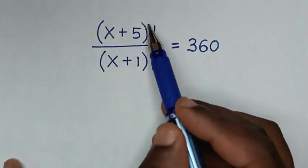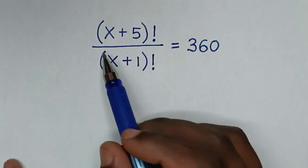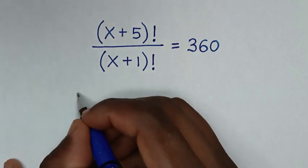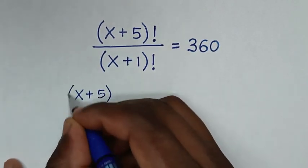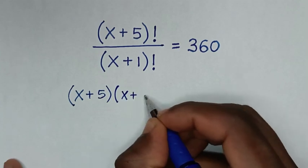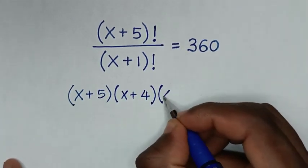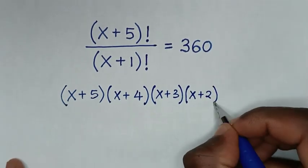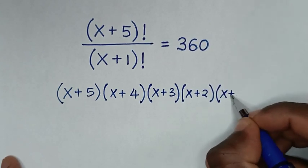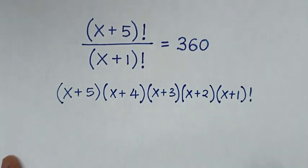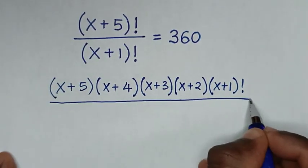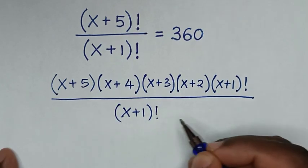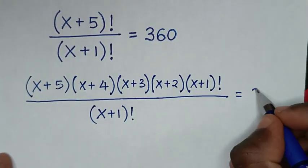In the numerator we expand (x+5)! So (x+5)! is the same as (x+5)(x+4)(x+3)(x+2)(x+1)! Then over the denominator (x+1)! is equal to 360.